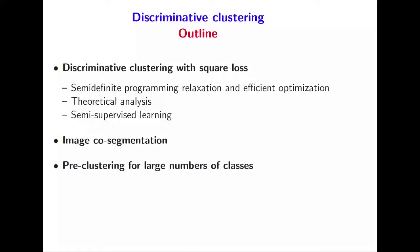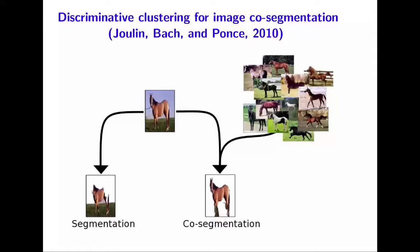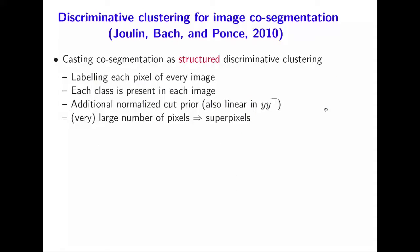Let's go to something more concrete: image co-segmentation. This is work with Armand Joulin and Jean Ponce. The goal is to segment images — give me an image, I want to assign foreground or background to every pixel. If you just go from scratch, this is quite a hard problem, and purely bottom-up segmentation doesn't work very well. There are two lines of work to improve this: either label some points, like in Photoshop, or — what we do in co-segmentation — provide a bunch of images with a similar object. We only tell the algorithm that we have images with a similar object, and we want to segment all of them together.